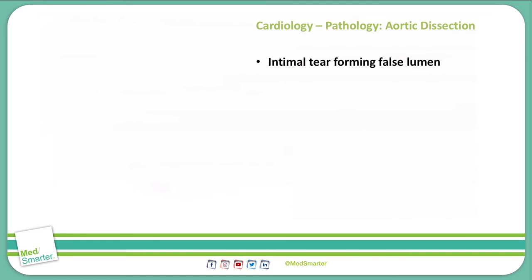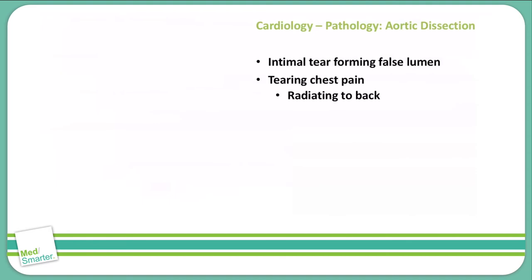Aortic dissection is an intimal tear that forms a false lumen within the aorta and allows blood to accumulate within that false lumen. Patients will often complain of a tearing chest pain that specifically radiates to the back between the scapula. On chest x-ray, we can see mediastinal widening, which is a sign of aortic dissection.